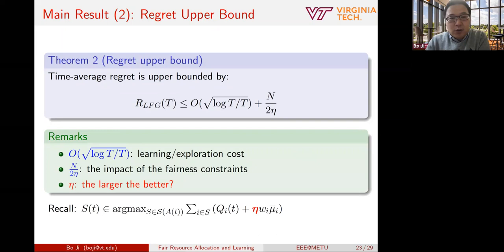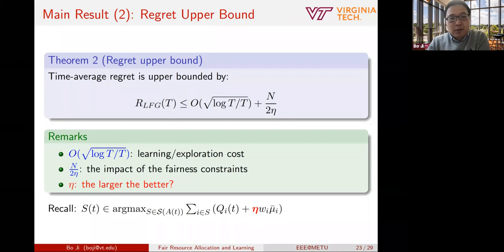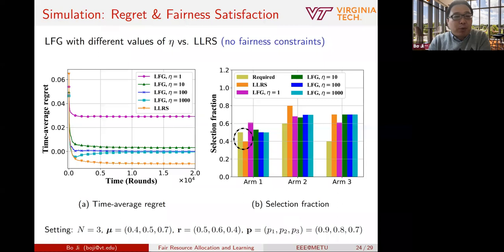As you can see, if you have a larger ETA, the regret bound is smaller — you have a smaller regret. But is it always better to choose a larger ETA? When you have a larger ETA, you pay more attention to reward maximization, so it may take longer to actually satisfy the fairness requirement. That is indeed an important observation in the simulation results.